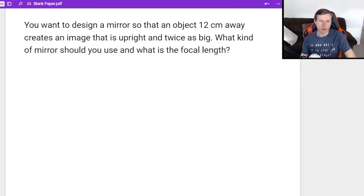This last one is going to be the hardest. You want to design a mirror so that an object 12 centimeters away creates an image that is upright and twice as big. What kind of mirror should you use and what is the focal length?